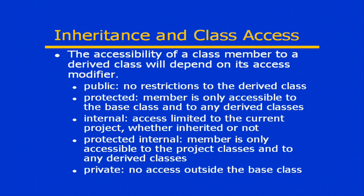Protected deals specifically with this concept of inheritance. When we have protected accessibility, it means that that member is accessible only to the base class itself and to any class that directly derives from that base class. So that means that if the base class Dog had a member that was protected, then you would be able to access that member through an instance of Poodle. However, if the method is protected and you're accessing it from a non-derived class — let's say we have a Cat class, for example — then this protected member would not be visible.